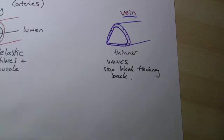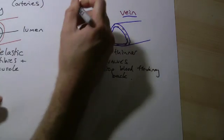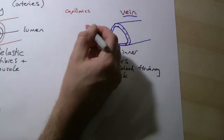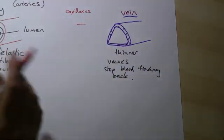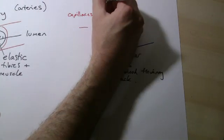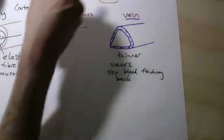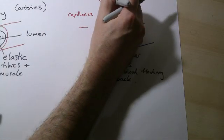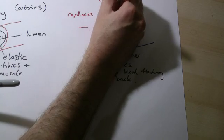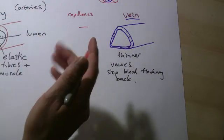Between arteries and veins, we have capillaries. And capillaries, I can't really draw them. Well, if I was drawing them to scale, they'd probably be like that. They're extremely small and thin. If you think of when you have a bloodshot eye, and you can see all those tiny little blood vessels sort of in there, those are capillaries. They're really thin, really small.